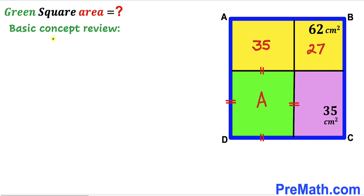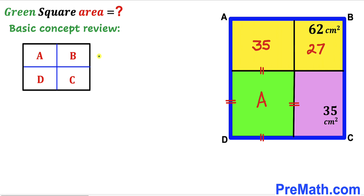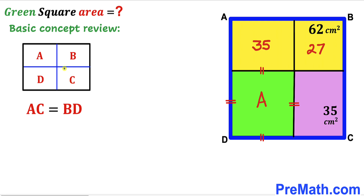Before we proceed, let me go over a basic concept. Consider a big rectangle consisting of four individual rectangles whose areas are A, B, C, and D. If we crisscross, we can write that A times C is going to be equal to B times D.